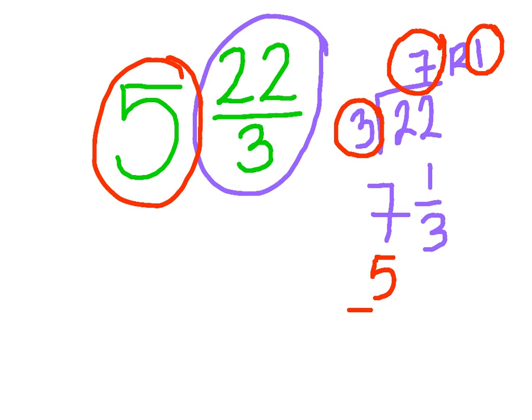I know that 7 plus 5, since I'm adding it to the whole number, is going to be 12, and the fractional part stays the same. Your answer in all is going to be 12 and 1 third.